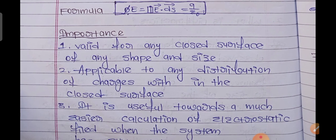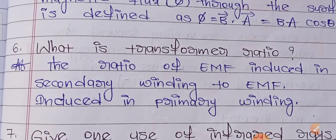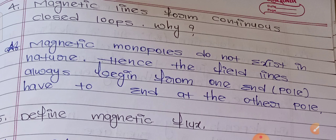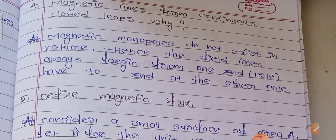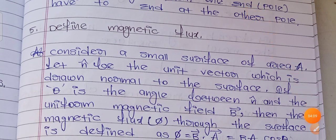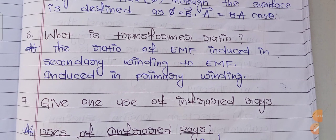Try to draw any formula or diagrams. If you are feeling difficulty in memorizing the answer, at least memorize the formula, tables, or diagrams. Fourth one: magnetic lines form continuous closed loops — why? Here is the fourth answer. Next, fifth: define magnetic flux.